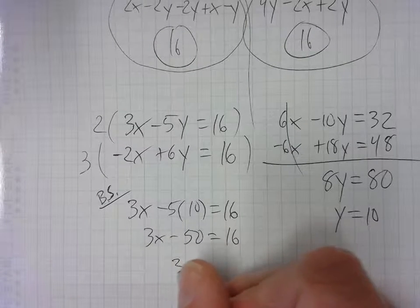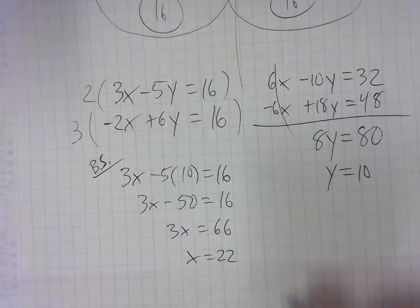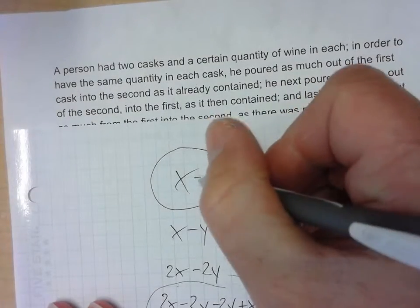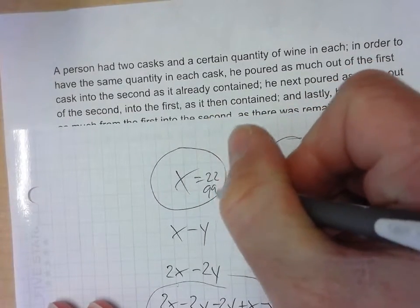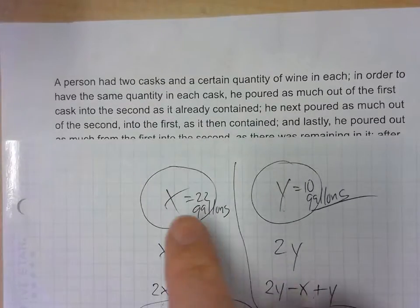So 3X is equal to 66. Divide. X is equal to 22. So it's 22 gallons of the other one. So this would be 22. 22 gallons in this one. The first, the first cask. So the original cask had 22 and 10.